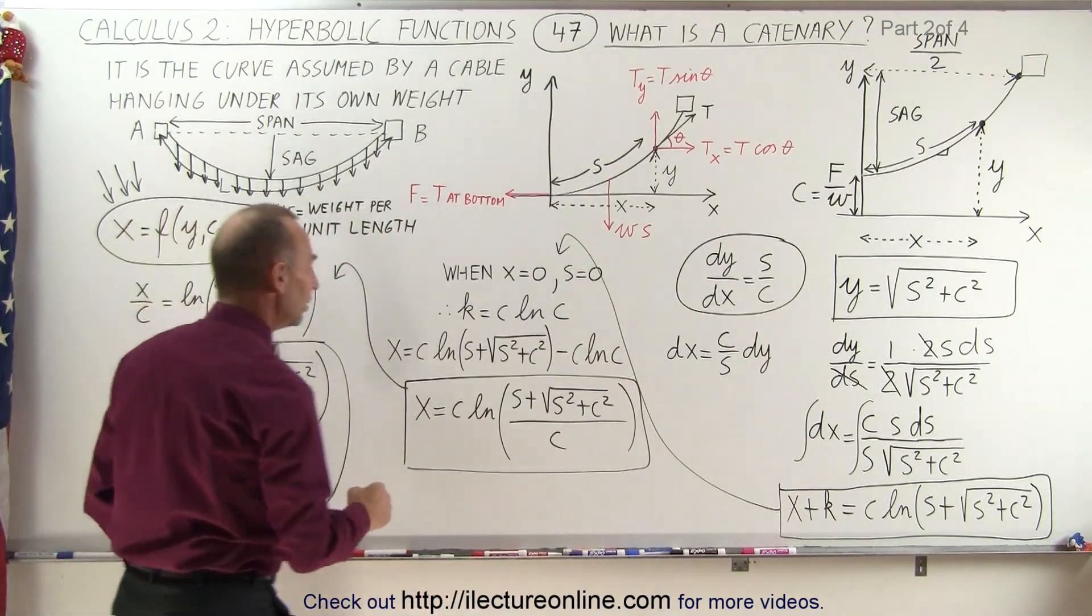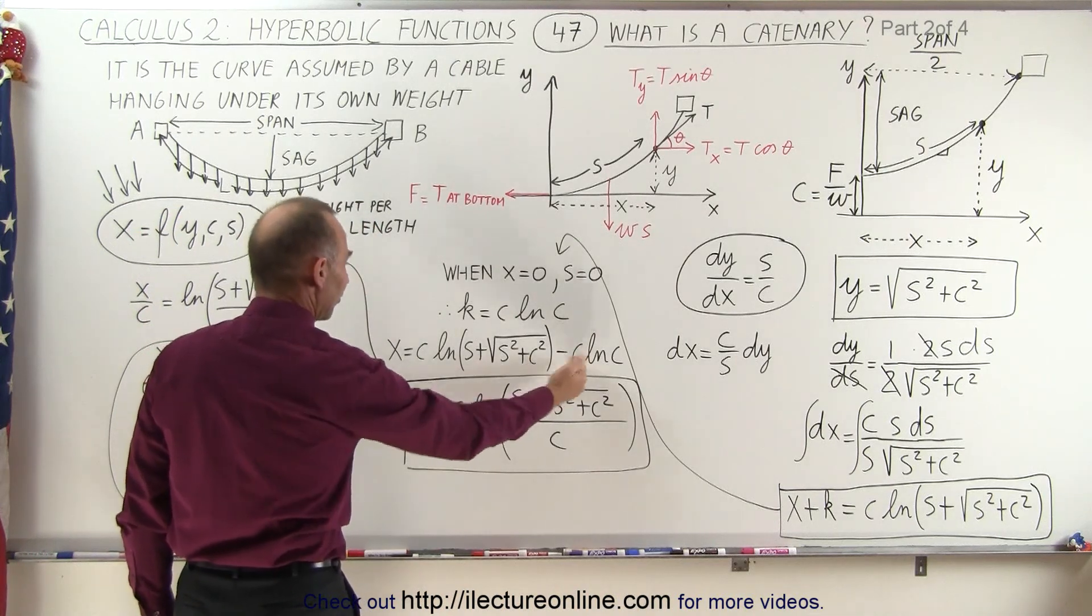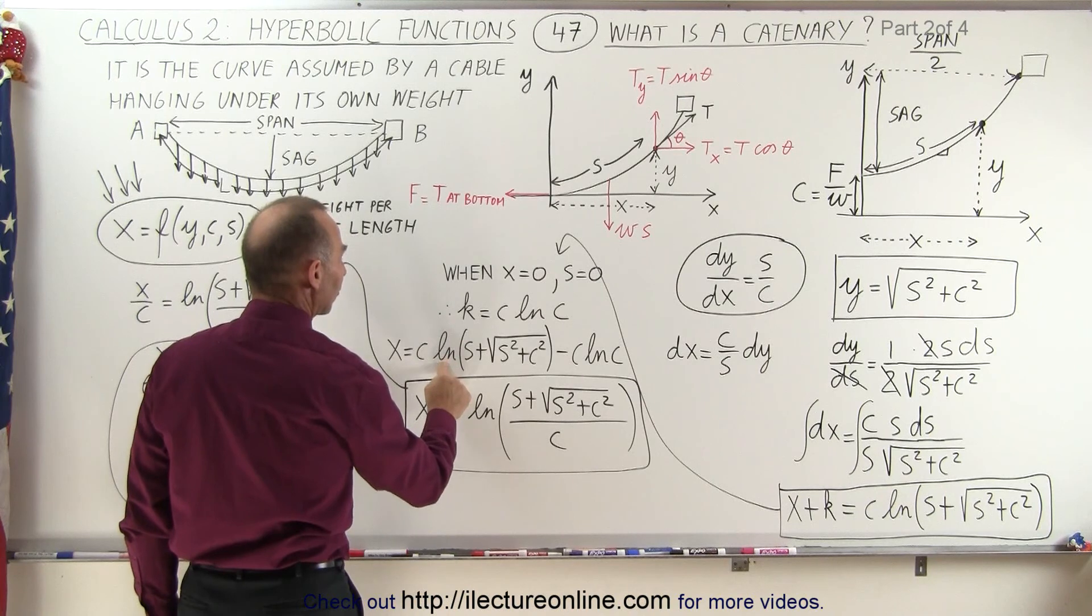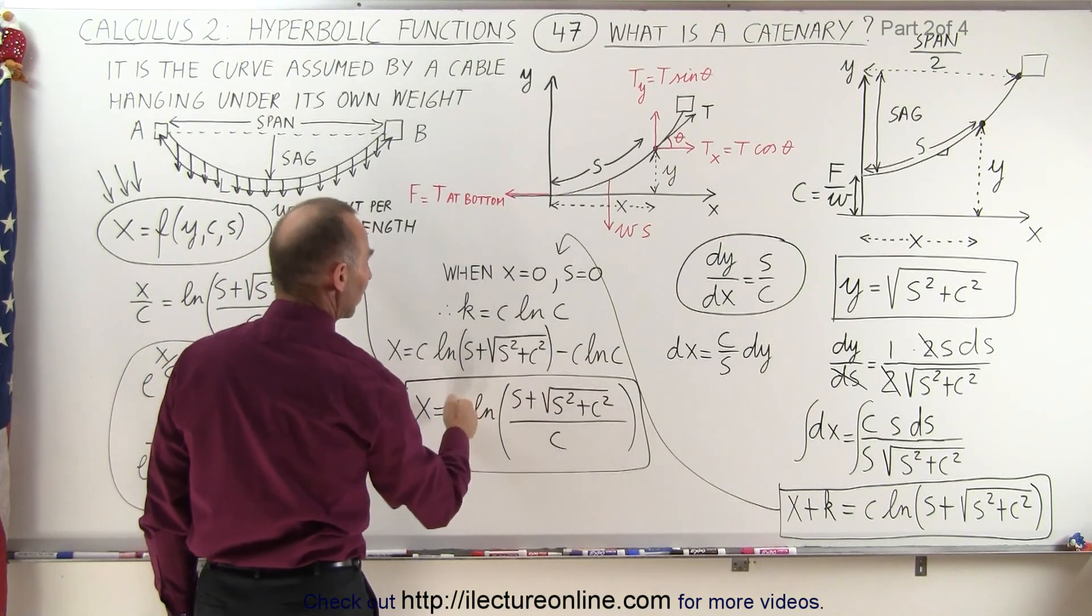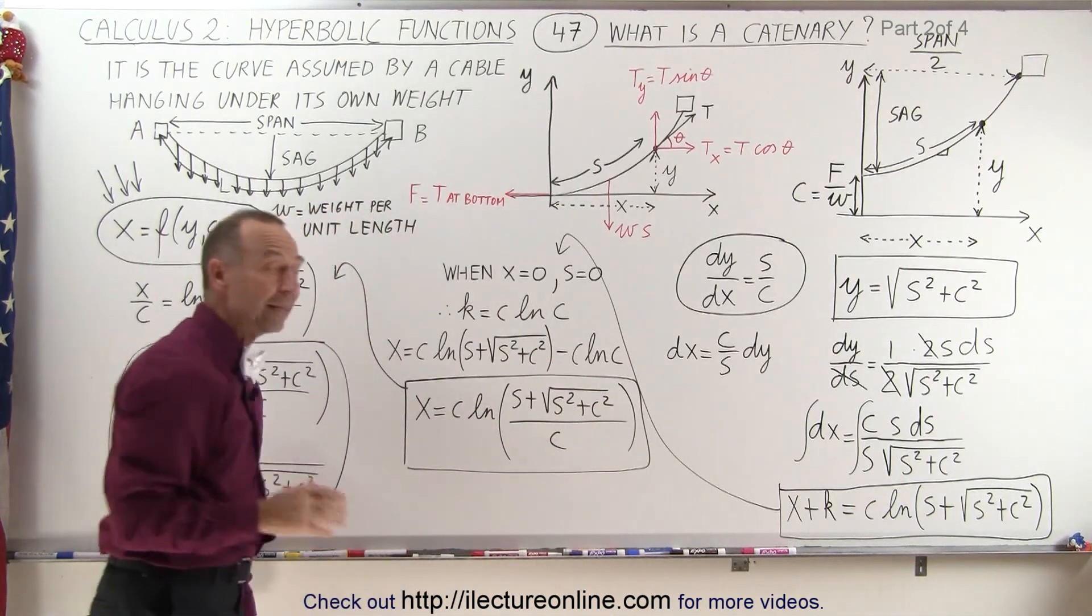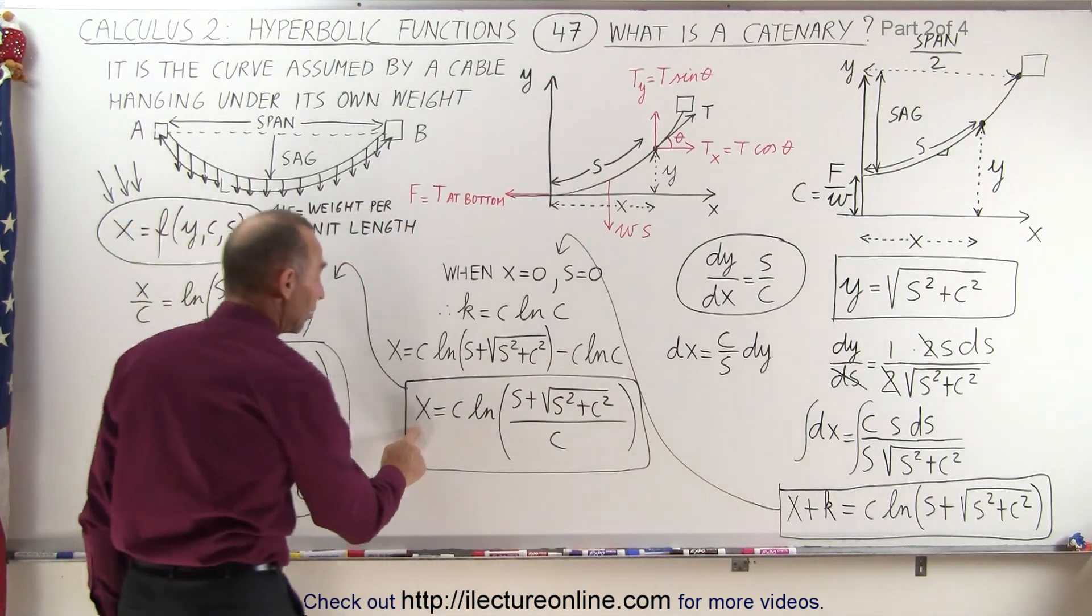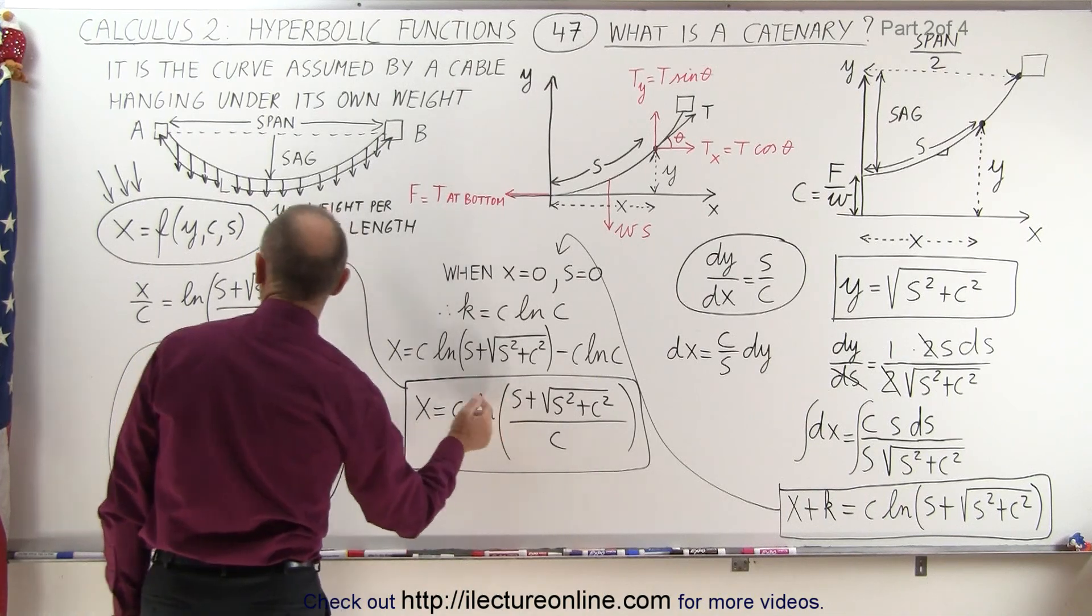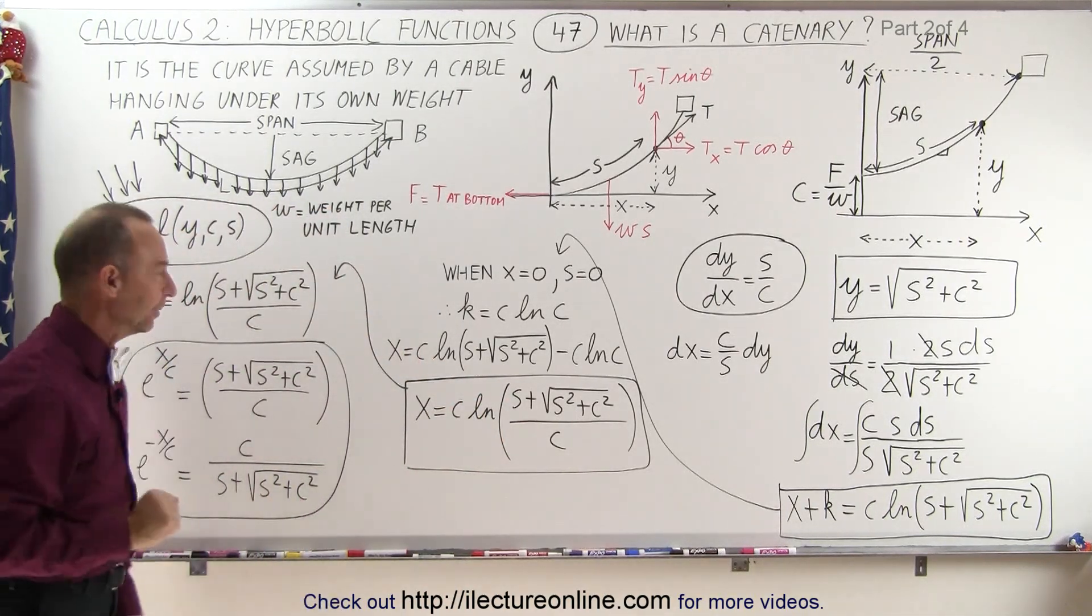And with a little bit of algebra, then we realize that if we first factor out of c, out of both terms right here, and the natural log of a minus the natural log of b is equal to the natural log of a over b, we can write it in this format. And now we have an equation where x is equal to a function of c, s, and not yet y.